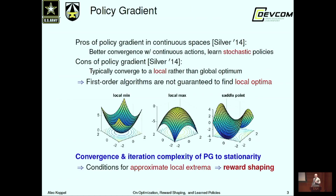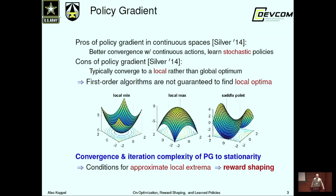We recently characterized that policy gradient methods are a variant of stochastic gradient algorithms. In continuous spaces, this defines a non-convex problem. We establish their convergence rates to stationary points. But the most interesting aspect of this analysis is we could characterize conditions under which they converge to approximate local extrema — and this hinges upon reward shaping.